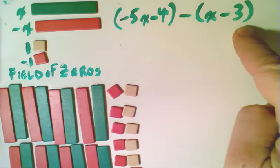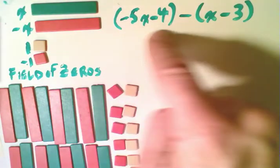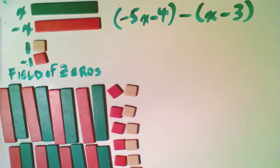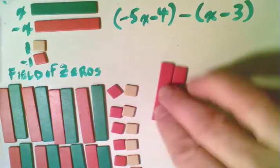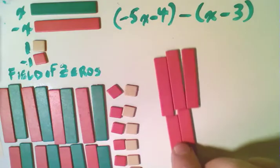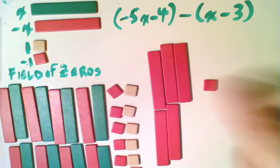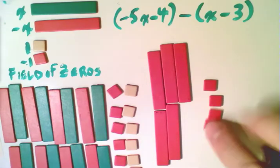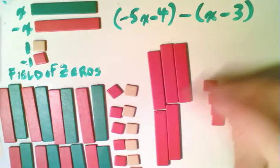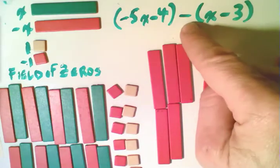But we're going to approach this problem in the same way. We have one bracket, and we want to subtract the other bracket from it. And so we start with putting a representation of this first bracket here. And so we have minus 5x, so a red tile is our minus. So there is minus 5x. And we have a minus 4. So there's our minus 4. And so we do as we did in the previous question, where this means to take away.